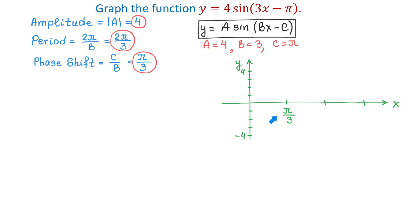If we take the phase shift, which is pi over 3, and add the period 2 pi over 3, then 1 pi over 3 plus 2 pi over 3 is 3 pi over 3, which is pi. So on the x-axis, pi over 3 plus 2 pi over 3 makes pi. Then if we graph the function over one period, the graph will be on the interval from pi over 3 to pi.